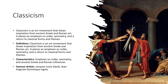We have classicism, defined as an art movement that draws inspiration from ancient Greek and Roman art. It places an emphasis on order, symmetry, and a return to classical forms and themes. The painting by Jacques-Louis David depicts a man taking an oath — you can see how well he captured the human form, and it's definitely Roman in its influence. It looks like Roman soldiers, and so this is a form of classicism.